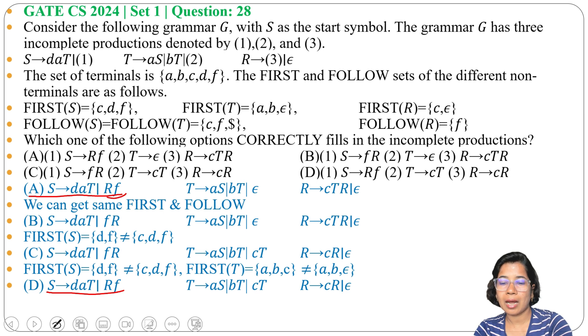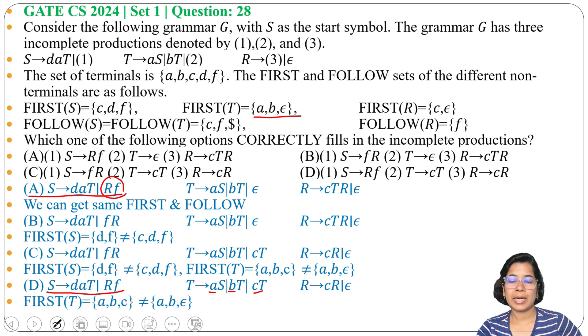Now check first of T. First of T is A, B, and C. But here first of T is A, B, and Epsilon. As first of T is not same, that's why option D is also not the answer. You can check all first and follow. I am not checking if I am getting one not equal. So here first of T are not equal. So you can declare this is not the answer.